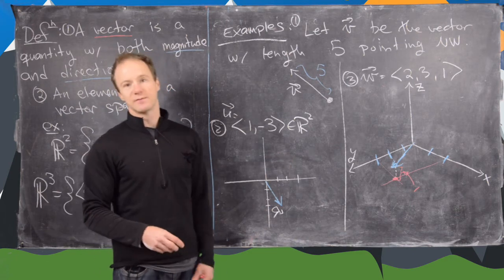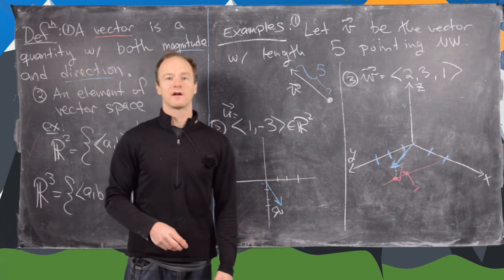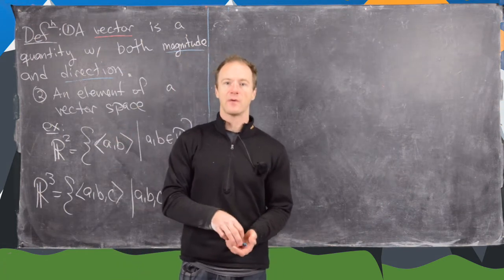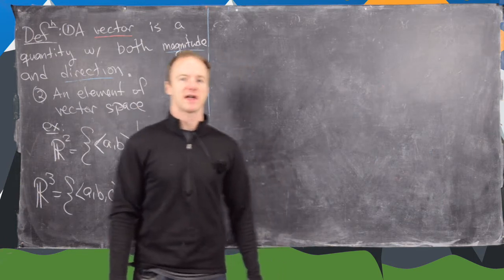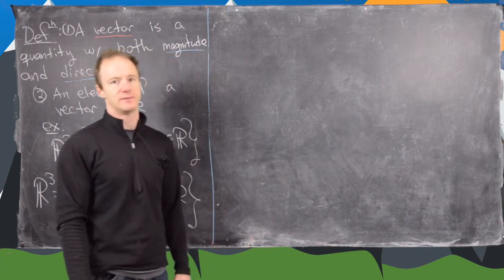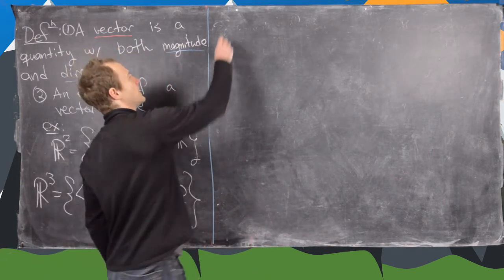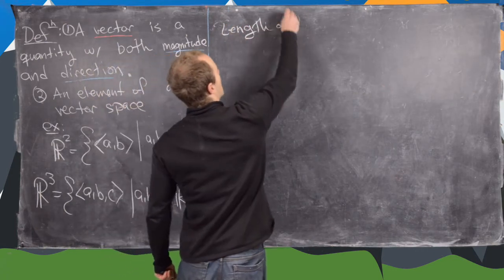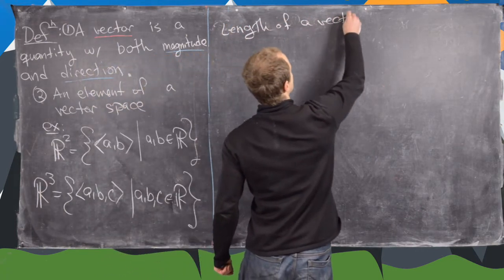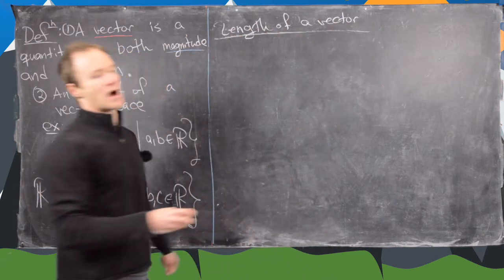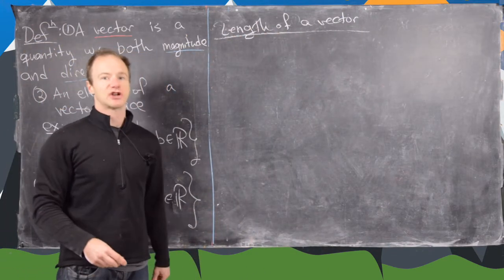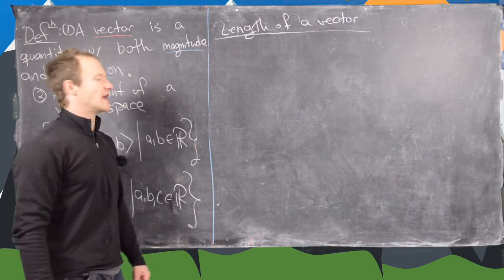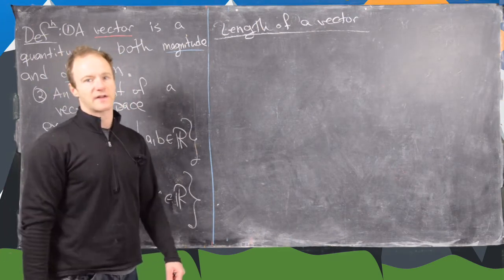Now we're going to erase the board and look at the notion of the length of a vector. Now that we have an idea of what a vector looks like in two-dimensional and three-dimensional space, we're going to look at the idea of the length of a vector. We'll sketch a derivation of the formula, then write it down carefully in a definition.